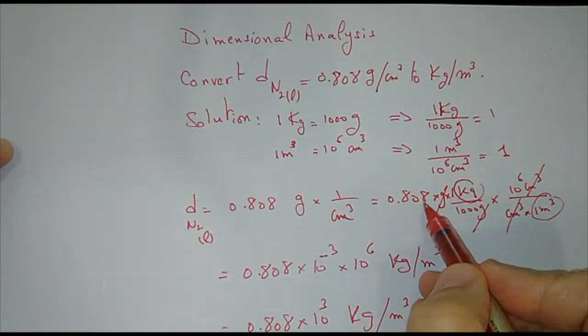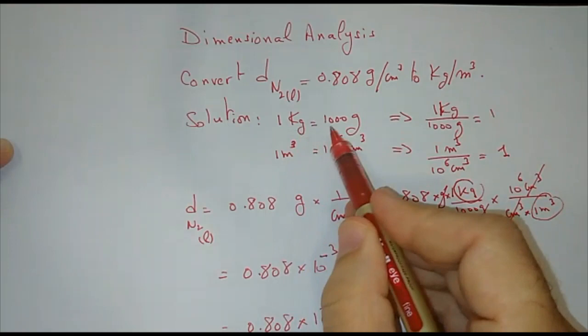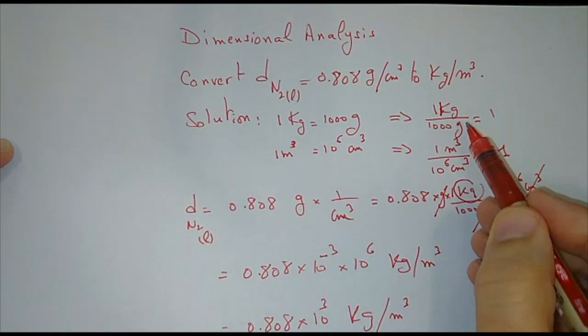Now I need to get rid of grams. If I multiply this by the number 1, it will not change. Is 1 kilogram divided by 1,000 grams equal to 1? Yes, and grams should be in the denominator.